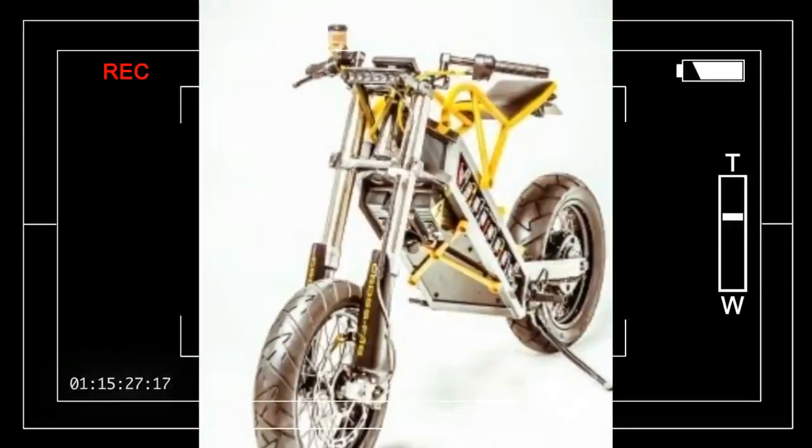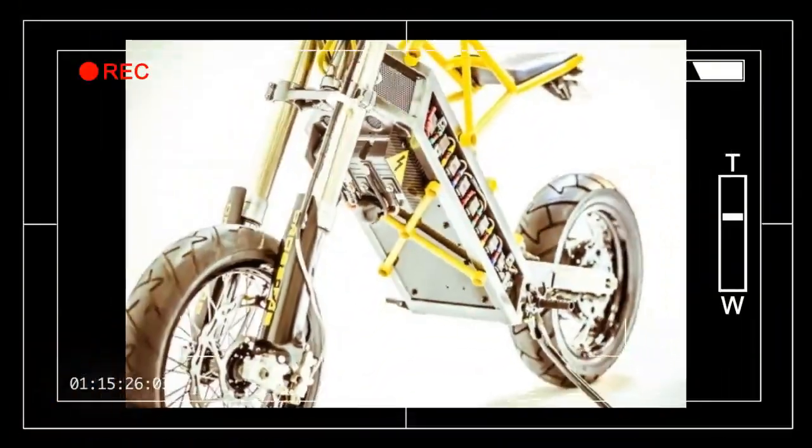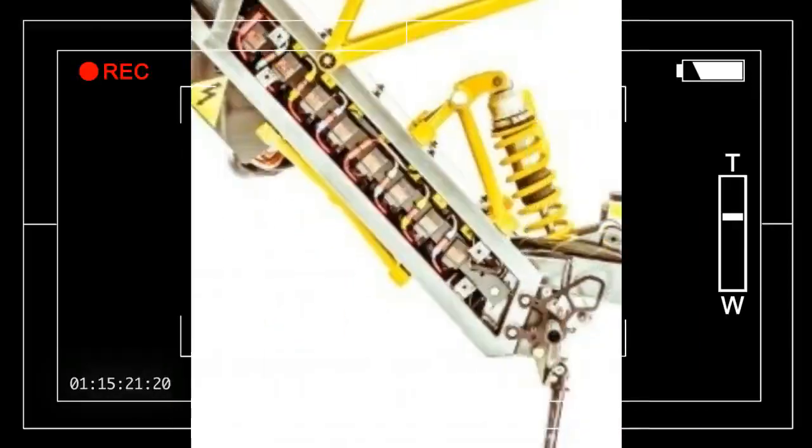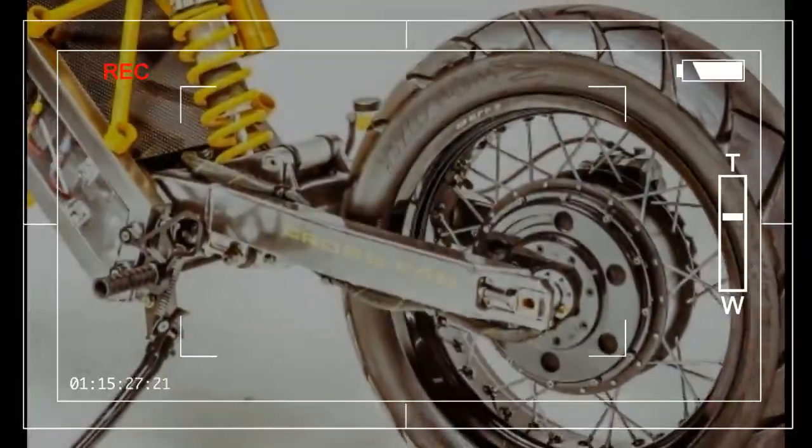The front suspension is from a 2005 Suzuki RMZ 250, and the neck and rear swing arm are from a 1995 Suzuki RM125—eBay and Craigslist finds, respectively.